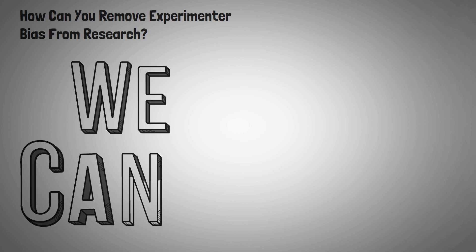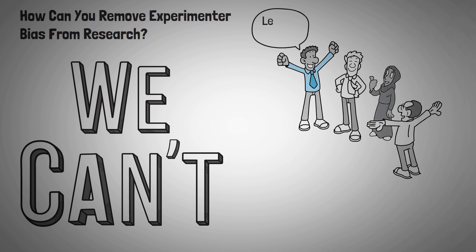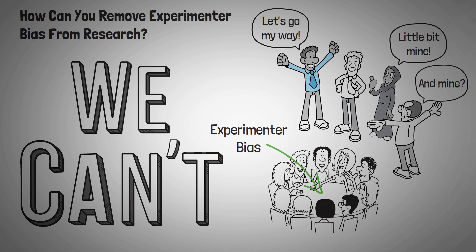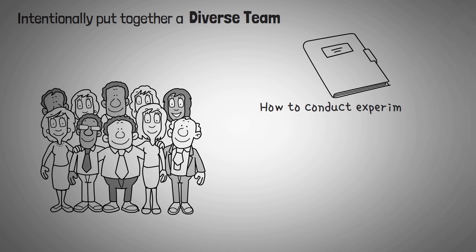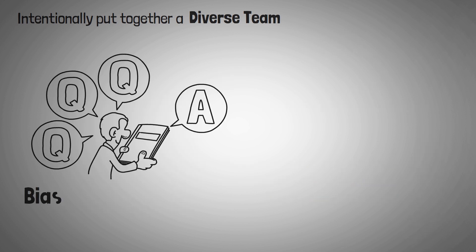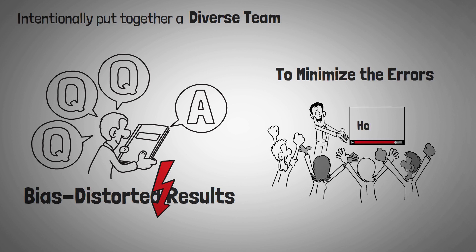How can you remove experimenter bias from research? Unfortunately, experimenter bias cannot be fully stamped out as long as humans are involved in the experiment process. Our upbringings, education, and experience may always color the way we gather and analyze data. But experimenter bias can be controlled — first by sharing this phenomenon with people involved in conducting experiments. Another way is to intentionally put together a diverse team and encourage open communication about how to conduct experiments. The larger the group, the more perspectives will be shared and biases revealed. Biases should be considered at every step of the process, and experimenters should be properly trained with clear rules and procedures in place.